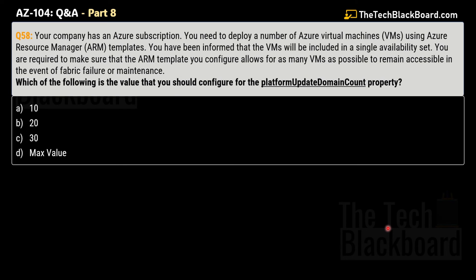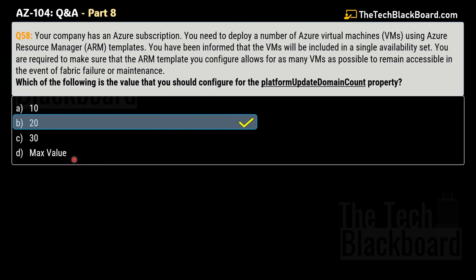Question 58 is related. Your company has an Azure subscription and you need to deploy Azure virtual machines using ARM templates into a single availability set, allowing as many VMs as possible to remain accessible during fabric failure or maintenance. Which value should you configure for the platform update domain count property? Options are 10, 20, 30, or max value. The correct answer is Option B — 20.